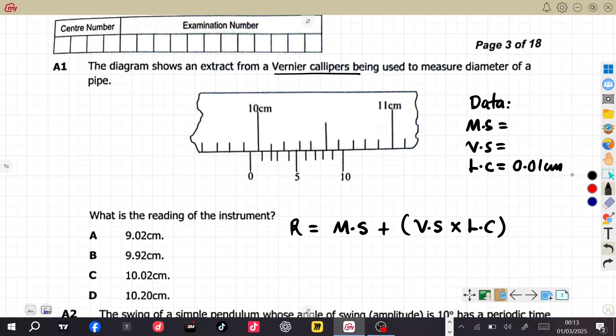So you need to memorize this value. The least count for a Vernier caliper, when it is in centimeters, it is 0.01 centimeters. So, the least count is just the smallest quantity or measurement that a particular instrument is able to measure accurately. So for the Vernier caliper is able to measure up to 0.01 centimeters accurately. So after we put this information down, we need now to know where are we going to get our main scale reading? Where are we going to get the Vernier scale reading?